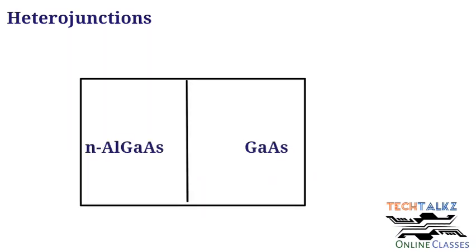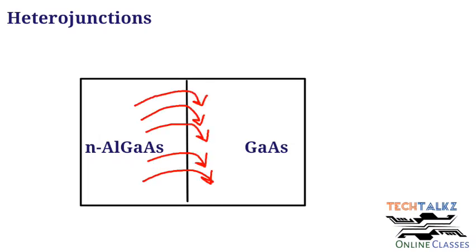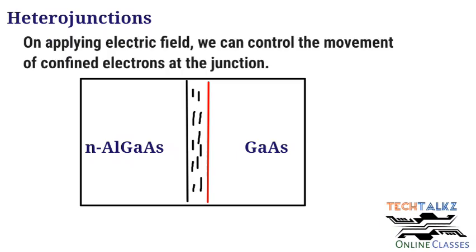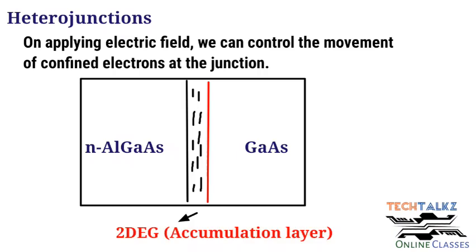When we form heterojunctions, at the interface towards the gallium arsenide, electrons will be accumulated and trapped inside a potential well in the gallium arsenide region. This is due to the discontinuity in energy levels of AlGaAs and GaAs. By applying an external electric field, we can control the movement of these confined electrons trapped at the junction. This layer of trapped electrons at the interface is called two-dimensional electron gas, or 2DEG.